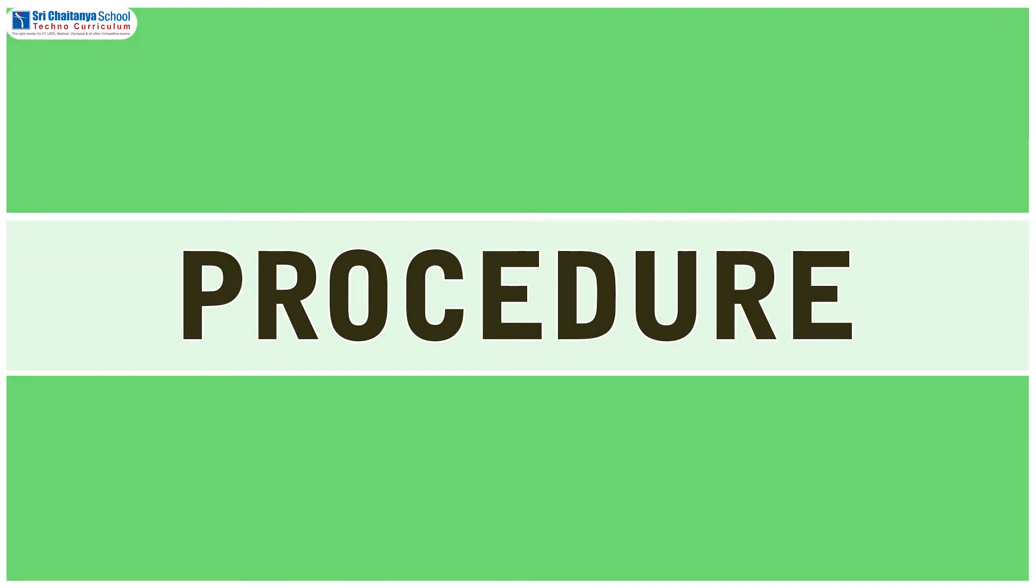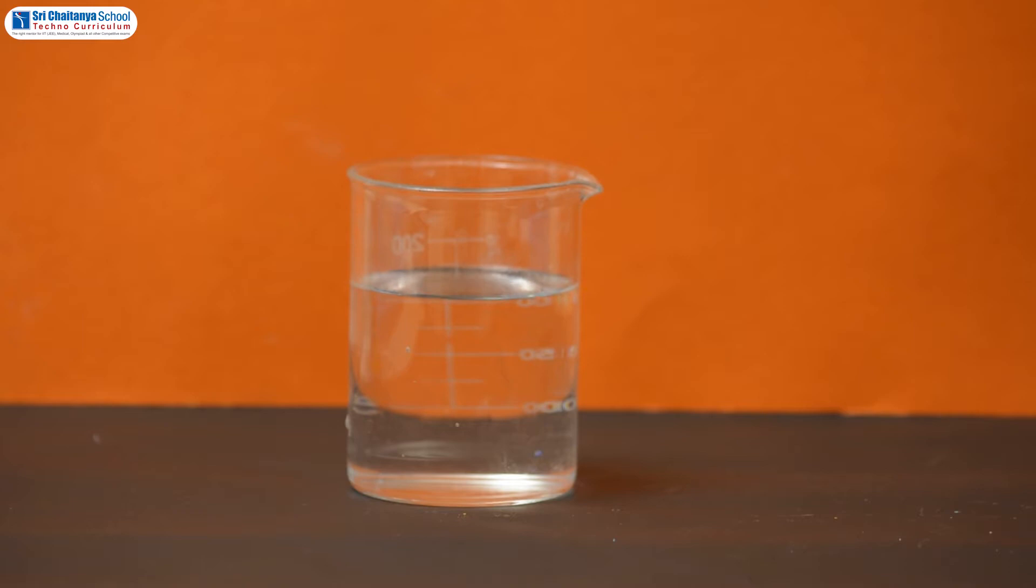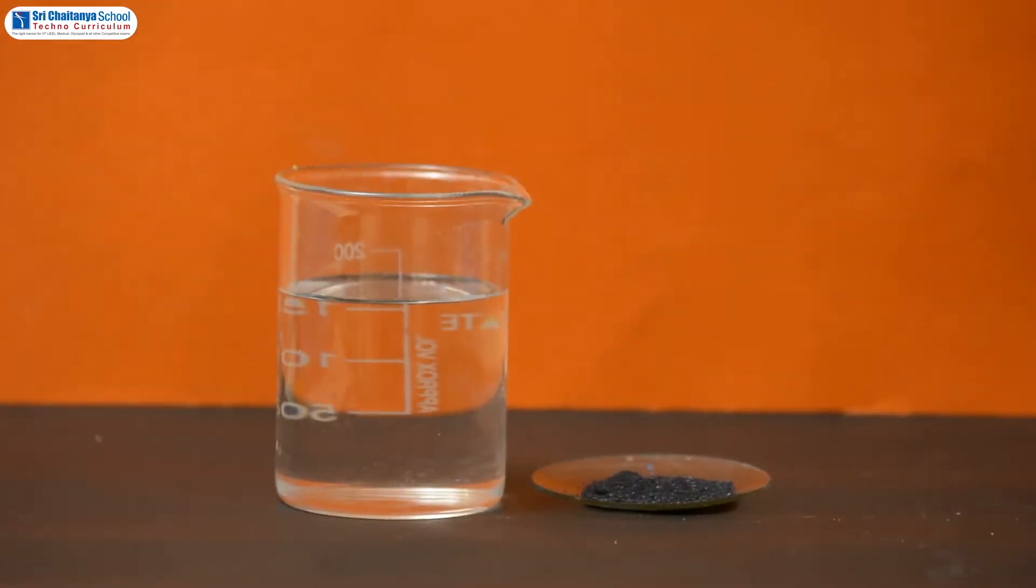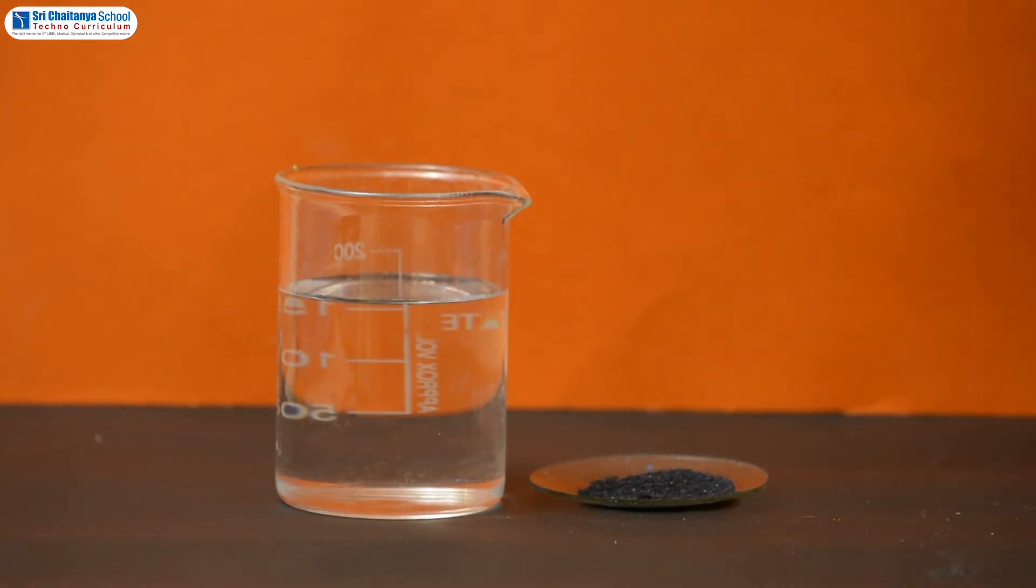Now it is time to see the procedure. Take a beaker with clean water. Now add a pinch of crystals of potassium permanganate and dissolve them thoroughly.